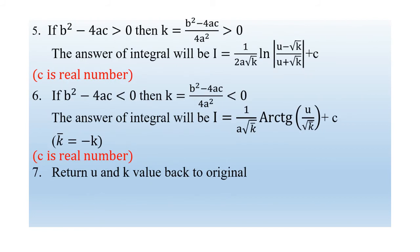In step five, consider the case when b² - 4ac > 0. Then k = (b² - 4ac) / 4a² > 0, because 4a² is always greater than zero. When k > 0, the answer is I = (1 / (2a√k)) × ln|(u - √k) / (u + √k)| + C, where C is a real constant.